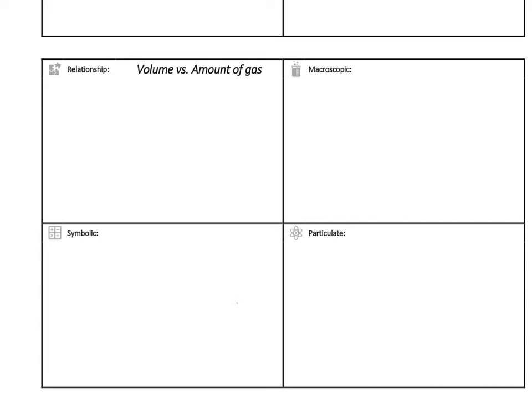Okay, so our last set of gas relationships are going to look at volume versus amount of gas to start out with. So we want to say, as amount of gas increases, volume increases when temperature and pressure are constant.